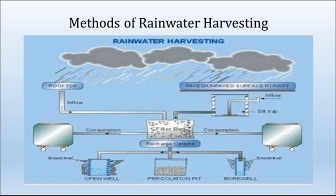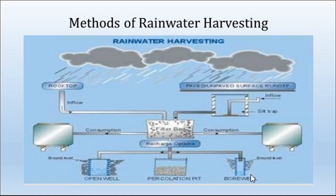We will move towards the methods of rainwater harvesting. This picture shows typically the method of rainwater harvesting from a rooftop, where you can see that the water accumulated on the roof in the form of rainfall is conveyed to the ground via filter beds and then used for consumption. Either we can use the water to recharge via bore wells or open wells, or we can use the water percolated through the rainwater harvesting system.